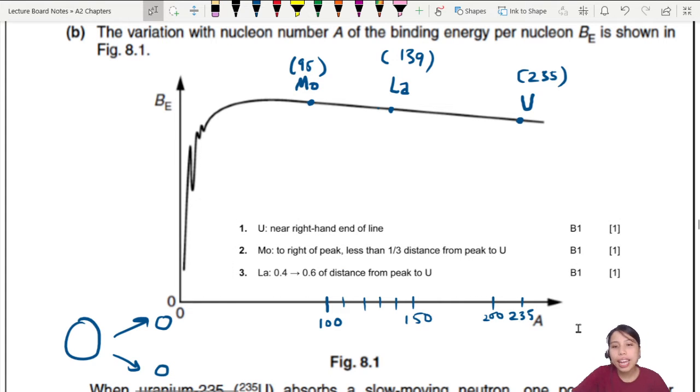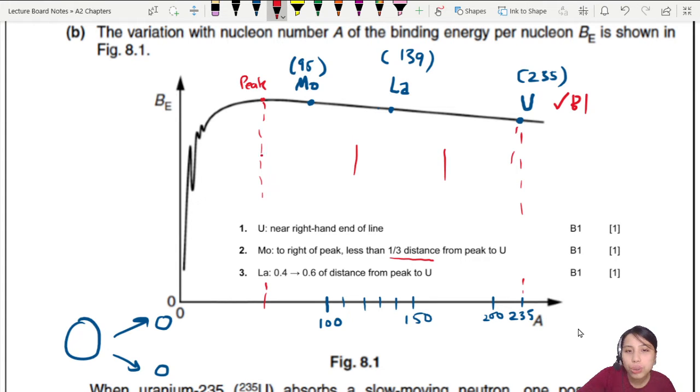U near the right-hand end of the line - that's one mark. Molybdenum to the right of the peak. Where's the peak? Peak is somewhere here. And it must be less than one-third the distance from peak to U. So from peak to uranium - one-third means I divide into three parts. One-third will be here, so you must be within this range.